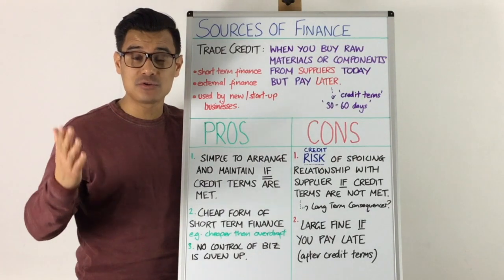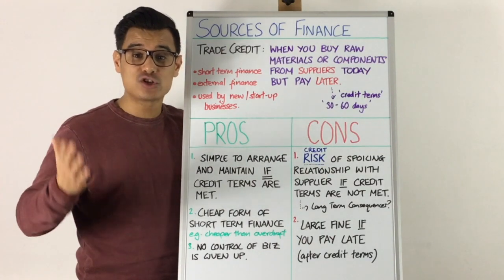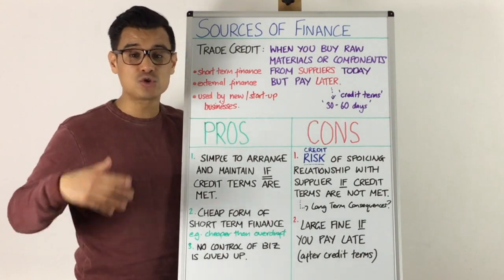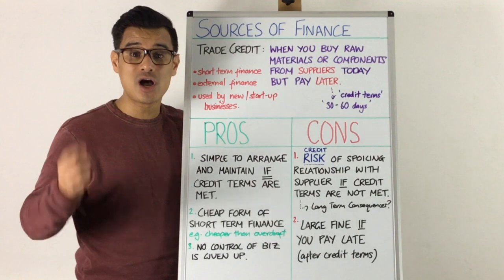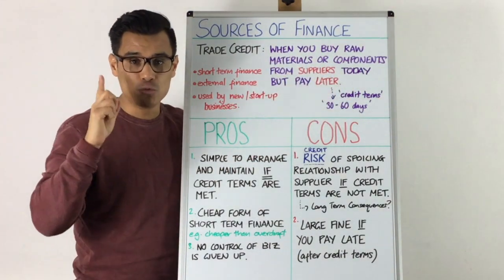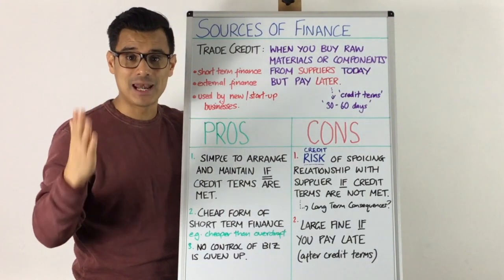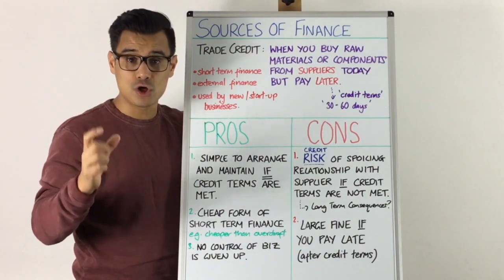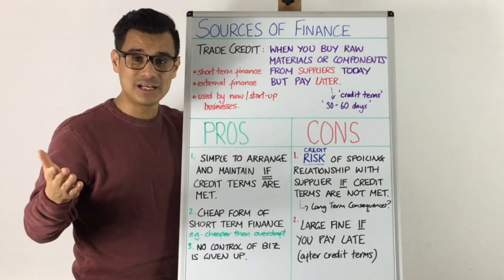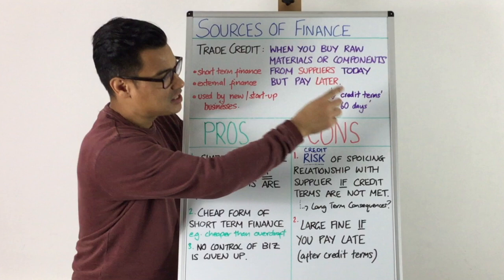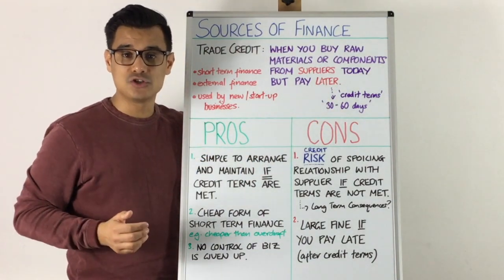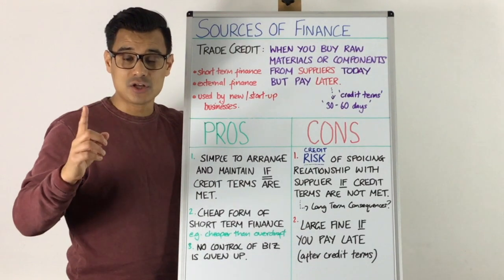The next sources of finance session is going to be on trade credit. Trade credit is basically when you buy raw materials or components from your suppliers today but pay the cash later — usually somewhere between 30 to 60 days, though it's not unheard of to have 90 days to make that payment.